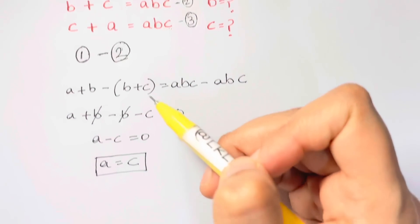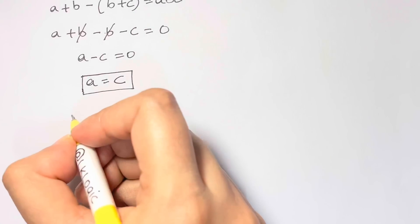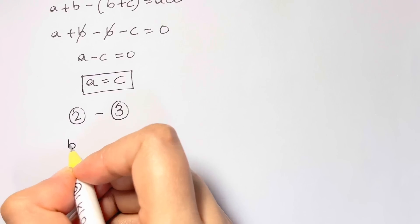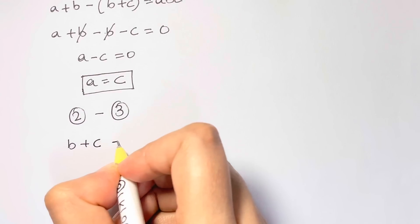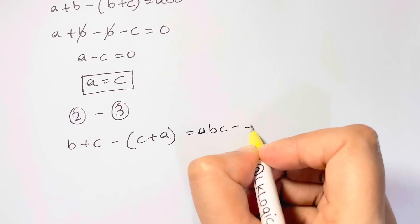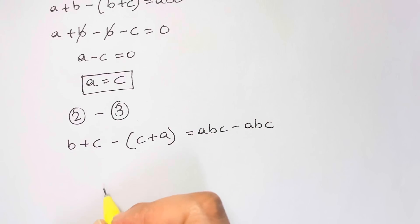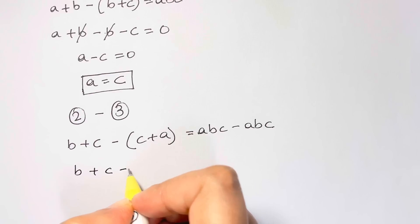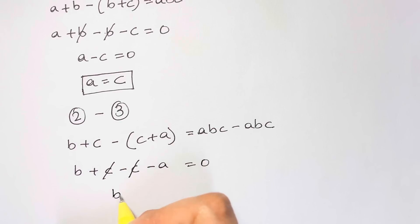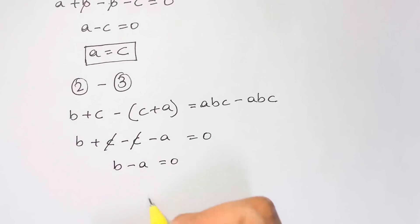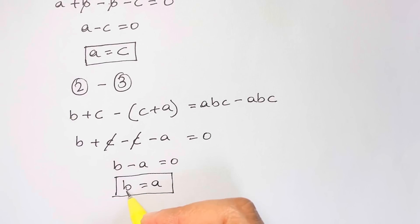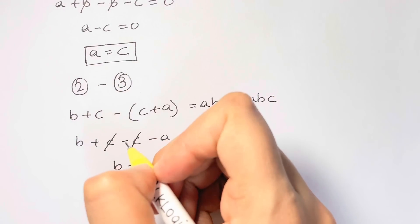Now let's subtract equation three from equation two. We get b plus c minus c plus a, which equals abc minus abc, so zero. The c's cancel, giving b minus a equals zero, therefore b is equal to a.